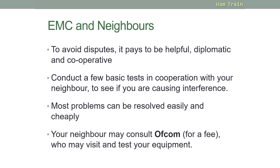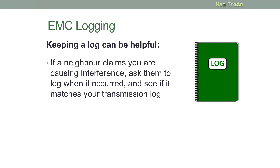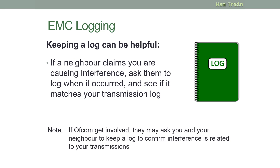Your neighbour may consult Ofcom if they believe that you are causing interference – they will be charged a fee, and Ofcom may visit and test your equipment to see if you are the cause. If there is an interference issue, it's a very sensible idea to keep a log. If the neighbour claims you're causing interference, get them to keep a note of when that interference is happening. If you log your transmissions as well, you can see if when their interference is happening matches up with when you're transmitting. If Ofcom get involved, they may ask you or your neighbour to keep a log to confirm where the interference is coming from.